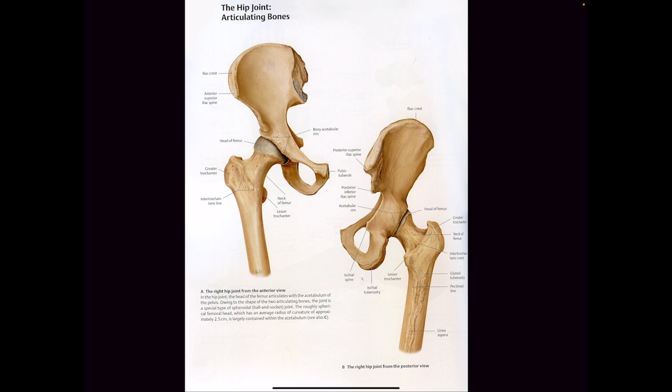The femur — if you've ever known anyone who's broken it, what do they have to do to fix it? Titanium rod. Why do they use titanium? It's the strongest metal. Your femur is the strongest bone in your body. If you've ever broken your femur, which is pretty hard to do, it takes a lot to heal it.